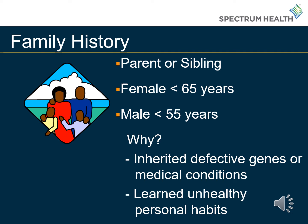Family history can also increase your risk for heart disease. Your risk is higher if your father or brother was diagnosed with heart disease before age 55, or if your mother or sister developed it before age 65. This can be due to inherited genes that have predisposed you to an increased risk, or it can also come from learned unhealthy personal habits, such as smoking or eating an unhealthy diet.